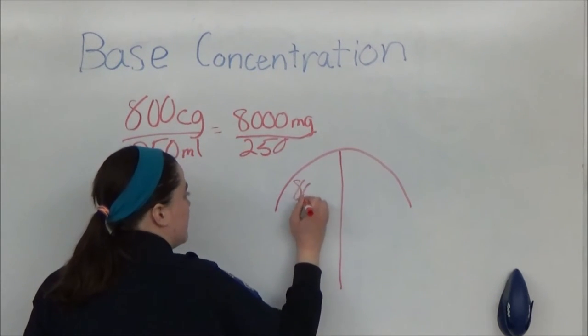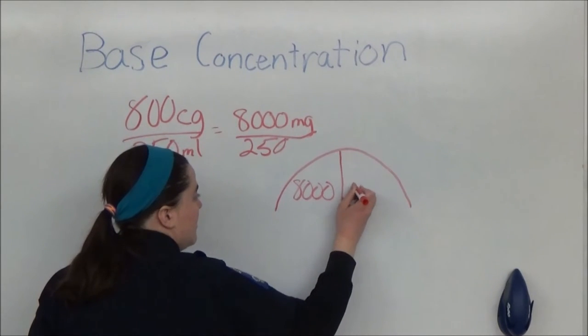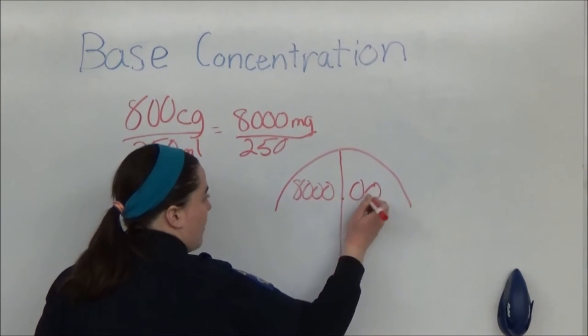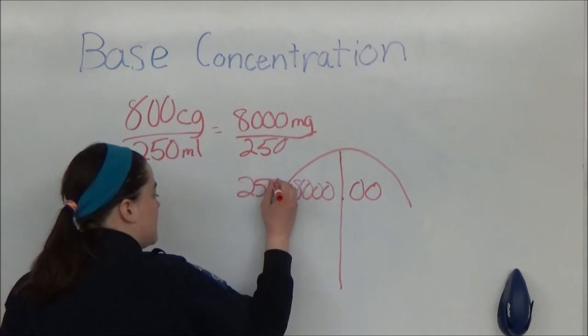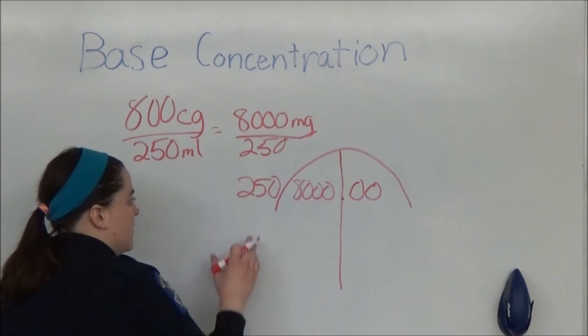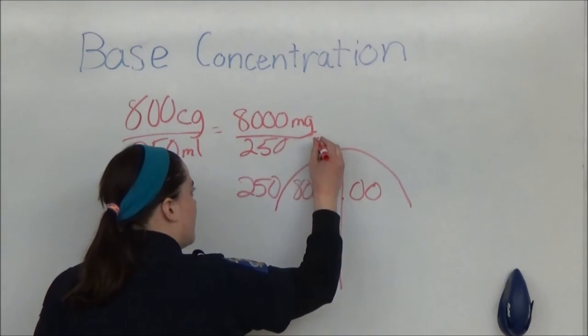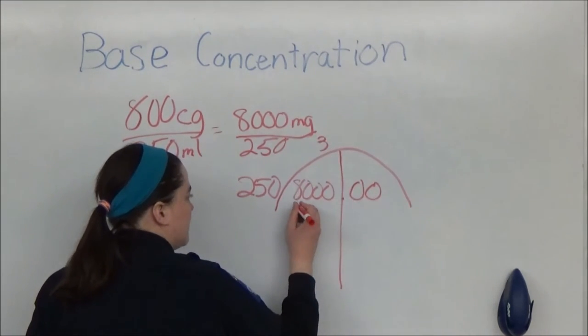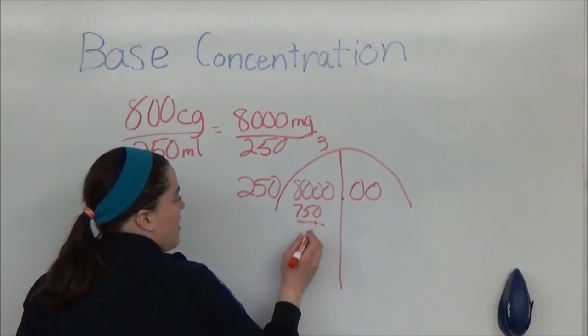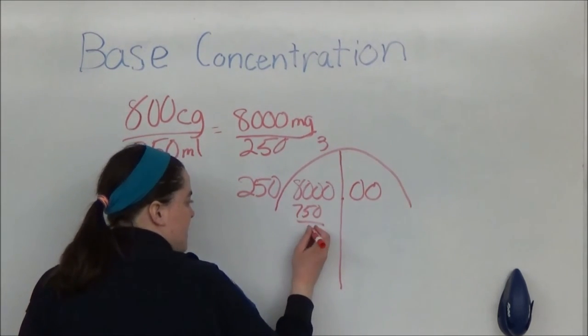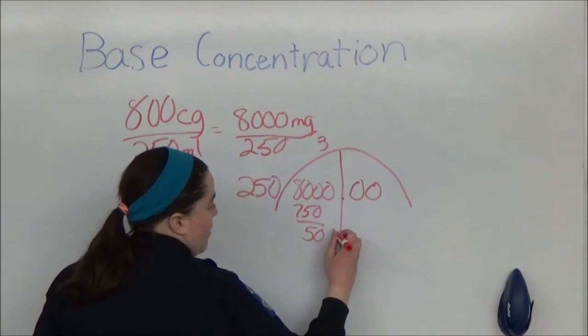Put your 8,000 on the left side of the umbrella with some placeholder zeros on the right. And your 250 goes on the outside. 250 goes into 800 three times. 800 minus 750 is 50. Bring down the last 0.